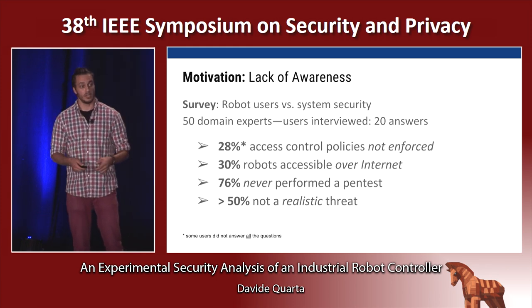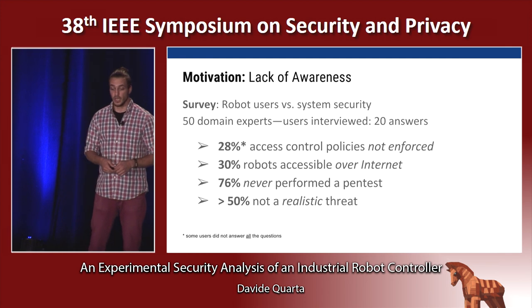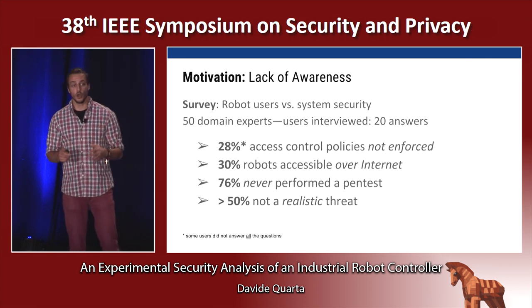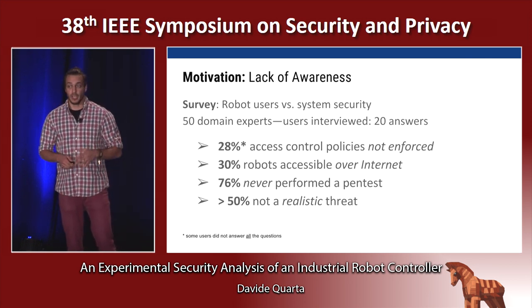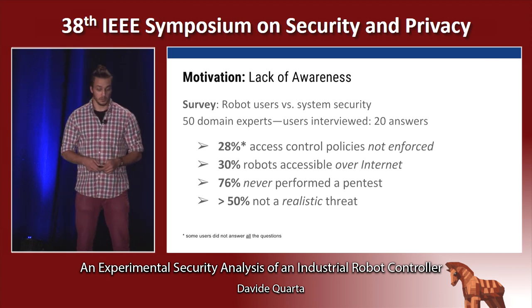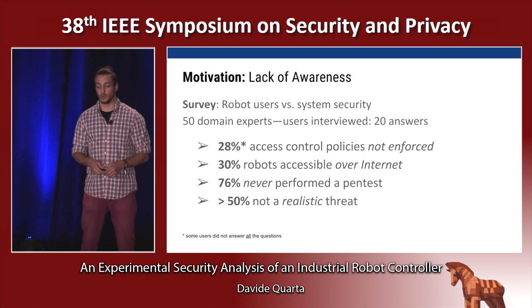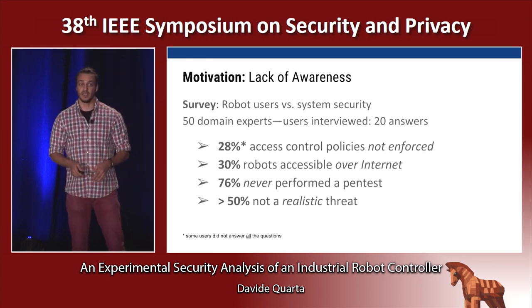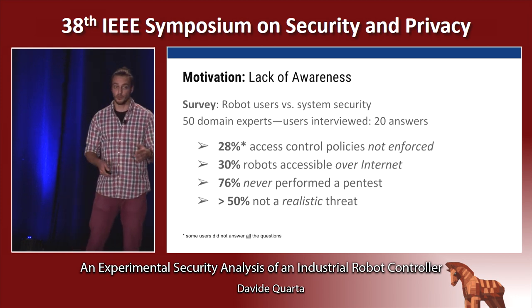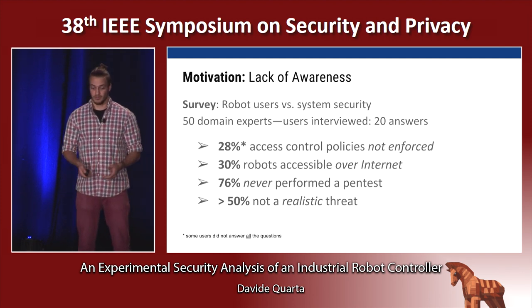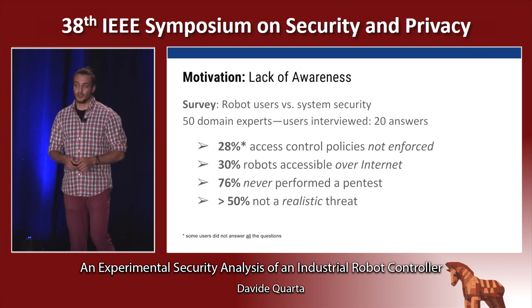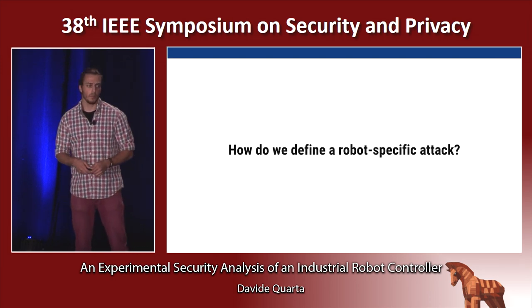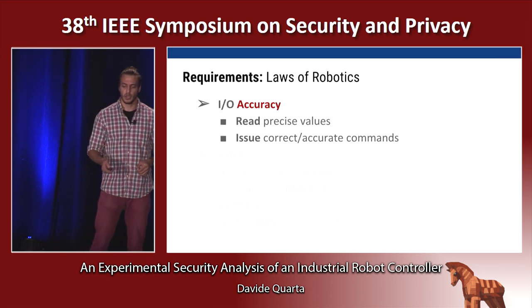Another motivation is the lack of awareness. We ran a survey between robot users and domain experts and found that 28% of users did not enforce access control policies, meaning no one can be blamed for any change to the program code running on the controller. 30% of robots were directly accessible over the internet with no intermediary. 76% never performed a vulnerability assessment of the network, and more than half did not think a cyber attack was a realistic threat on industrial robots.